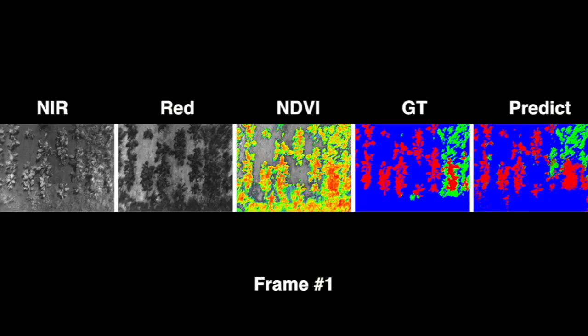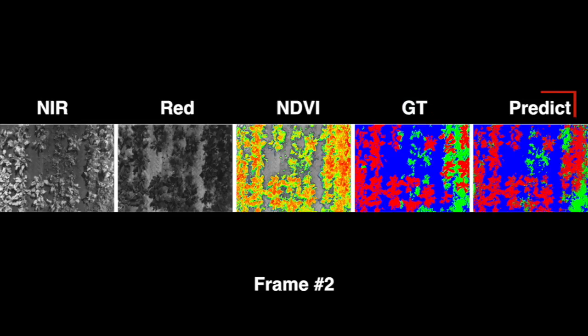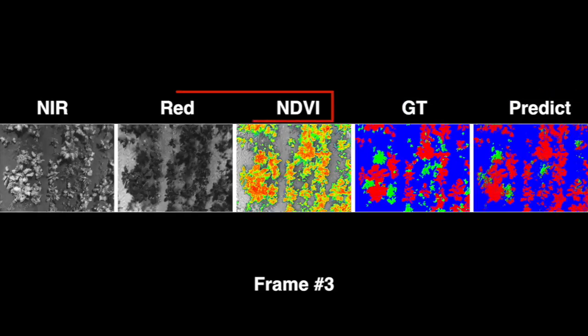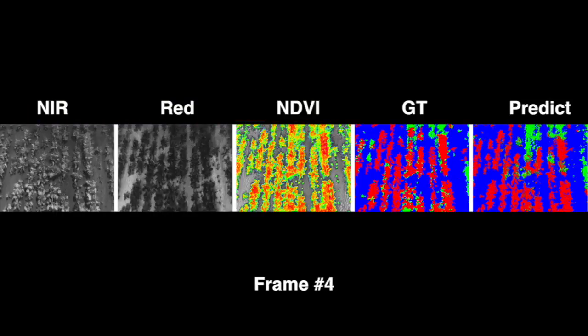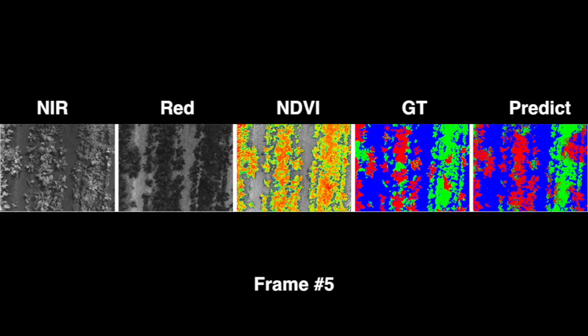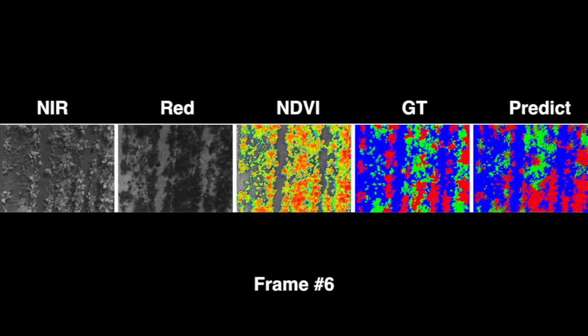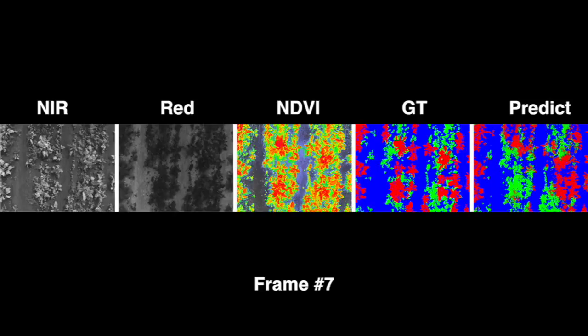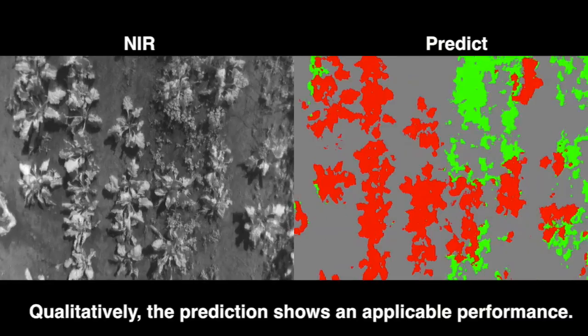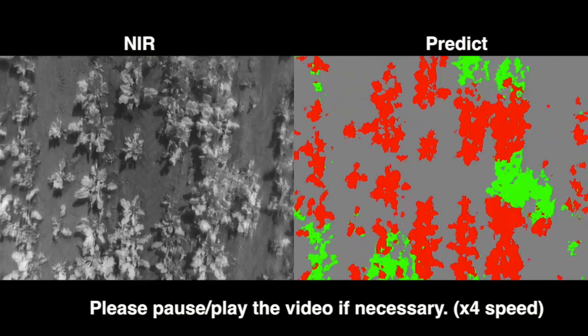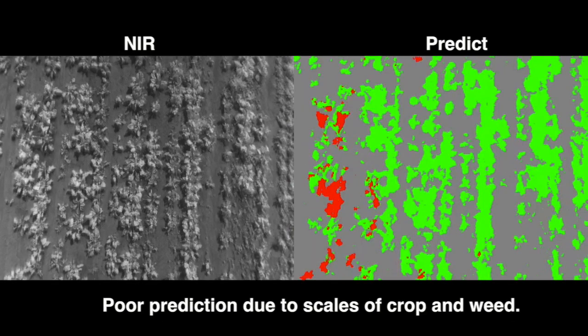For qualitative study, we show results for short and long prediction sequences. These frames show the short sequence. One can pause the video for a comparison of ground truth, labeled GT, against our network output, labeled PREDICT. The NIR, RED, and NDVI channels are the input to the network. Although our long sequence doesn't have ground truth, the network output shows reasonable qualitative performance. It can be seen that the model produces poor results due to scale variations between crops and weeds.